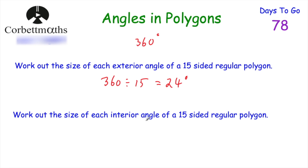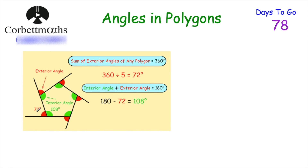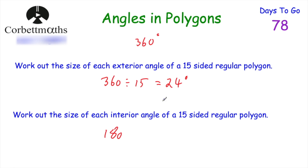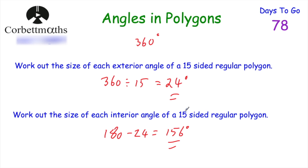Now find the size of each interior angle of the same 15-sided regular polygon. The interior angle and the exterior angle always add together to be 180 degrees. So 180 − 24 = 156 degrees. Each interior angle is 156 degrees. You could also have done this using (15 − 2) × 180 ÷ 15, which also gives 156 degrees, but using the exterior angle is probably a little simpler.